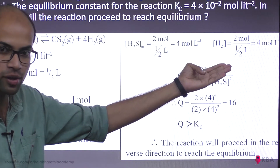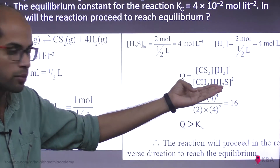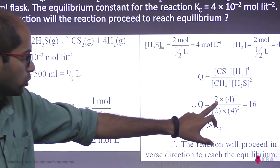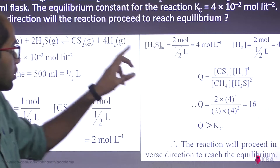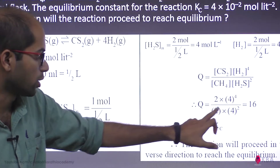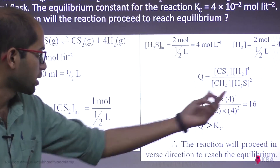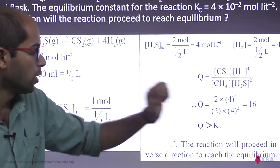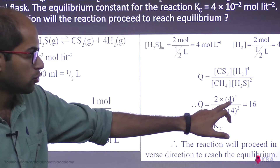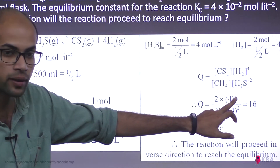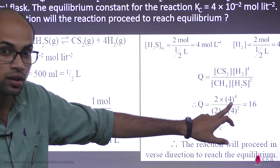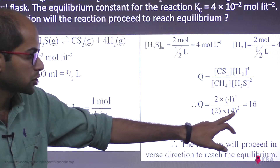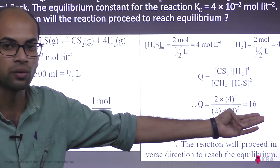The reaction quotient Q equals concentration of products raised to the power of stoichiometric coefficients, divided by concentration of reactants raised to the power of stoichiometric coefficients. So Q = [CS2][H2]⁴ / ([CH4][H2S]²) = (2 × 4⁴) / (2 × 4²) = (2 × 256) / (2 × 16) = 512 / 32 = 16.